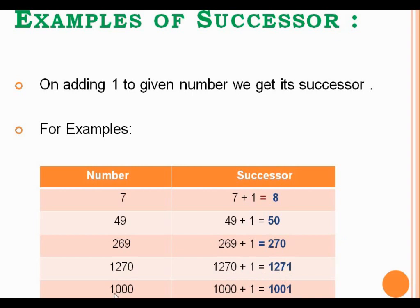Likewise, suppose the given number is 1000. So, for finding out the successor of 1000, we just add 1 to 1000, and we will get 1001. So, 1001 is the successor of the particular number 1000.